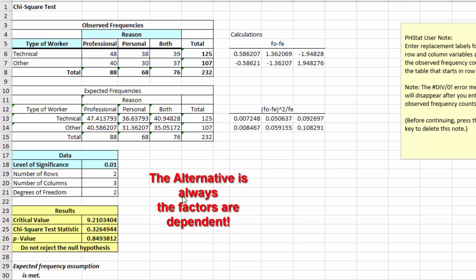The alternative is always that the factors are dependent upon one another. In this case, the claim was that the factors were related, were dependent. Therefore, we do not have sufficient evidence to support the claim.